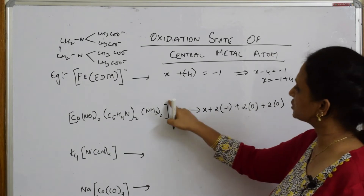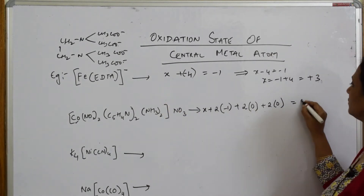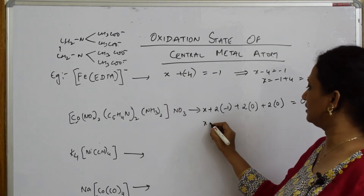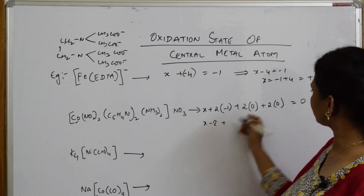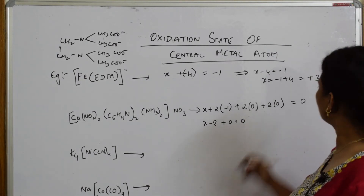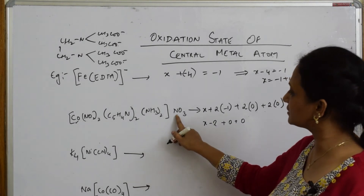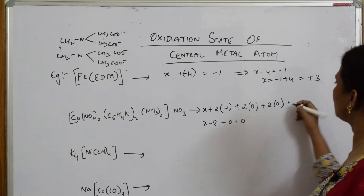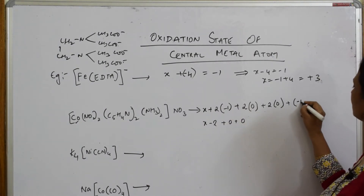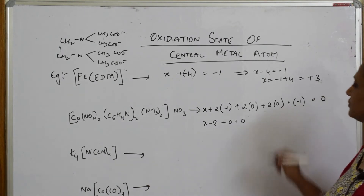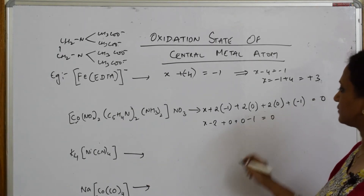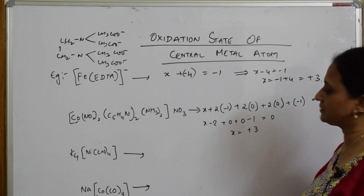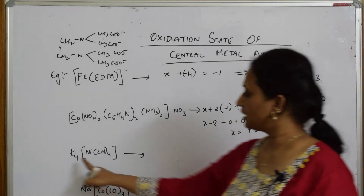The overall charge is 0. There's also NO3⁻ here — charge is minus 1, with only 1 of them, so that's minus 1. Setting up: X + (−2) + 0 + (−1) = 0, solving gives X = +3.